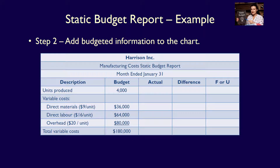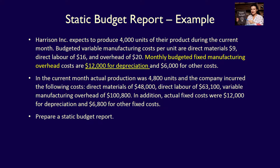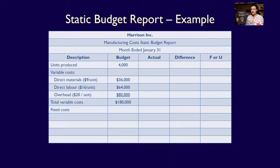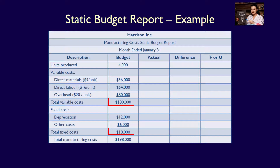We can now add the fixed costs from the question: $12,000 for depreciation and $6,000 for other costs, for a total fixed cost of $18,000. Last but not least, we calculate total manufacturing costs: $180,000 plus $18,000 for a total of $198,000.